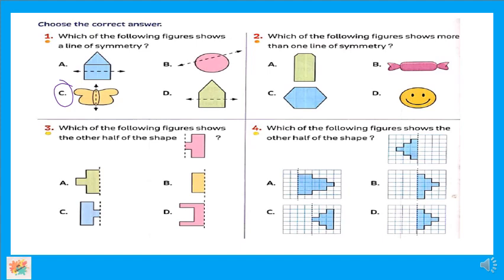طيب number two: which of the following figure shows more than one line of symmetry? مين اللي أقدر أرسم جوه أكتر من line of symmetry — مثلاً 2 أو 3 أو 4؟ Letter A أقدر أرسم جوه one line of symmetry بس، ما أقدرش أرسم غيره. والسويت الجميلة دي لو عملت كده تنفع تكون line of symmetry، بس ما ينفعش أرسم غيره لأن لو عملت كده اللي فوق مش زي اللي تحت. أما letter C — أقدر أرسم line كده وكمان line تاني كده، يبقى هي C has more than one line of symmetry.